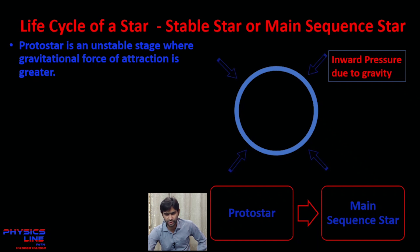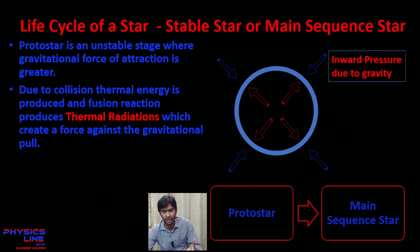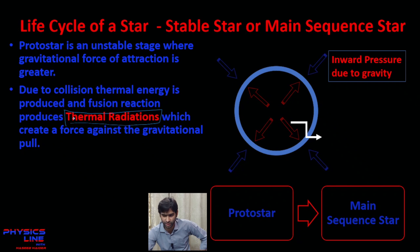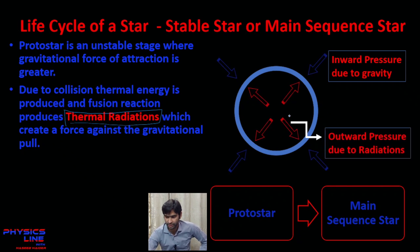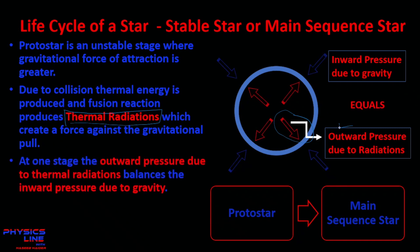The protostar is unstable because the force of attraction keeps shrinking the cloud. But due to collisions, thermal energy is produced which initiates nuclear fusion, producing even more thermal energy. This thermal radiation creates an outward pressure — shown by the red arrows — which opposes the inward gravitational pressure shown by the blue arrows.